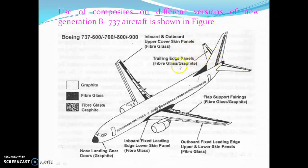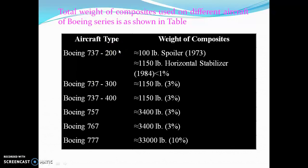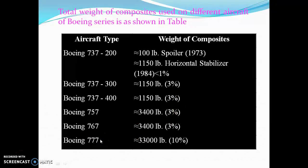The flap support fairings use graphite fiber and glass. In terms of composite weight used in the Boeing series, the Boeing 737-200 introduced in 1973 used only 1% composites. This gradually increased to 3%, and on the Boeing 777 it has increased to 10% of the structural weight.